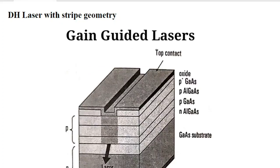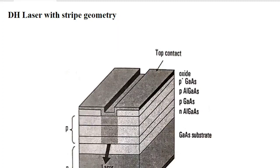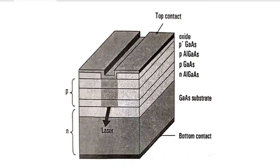In gain-guided lasers, the current injection to the laser is restricted to a narrow strip. This is realized by coating or placing an insulating layer on the uppermost semiconductor layer, just beneath the top contact. We use silicon dioxide as the masking or insulating layer. Hence the current flows through a narrow portion into the active region. The basic structure has metal ohmic contacts at the top and bottom.